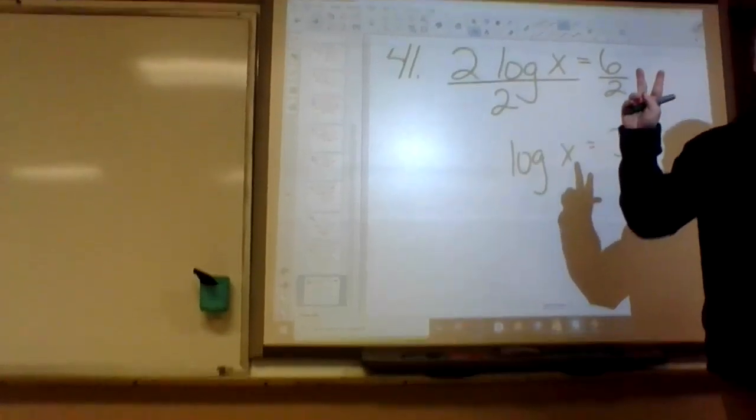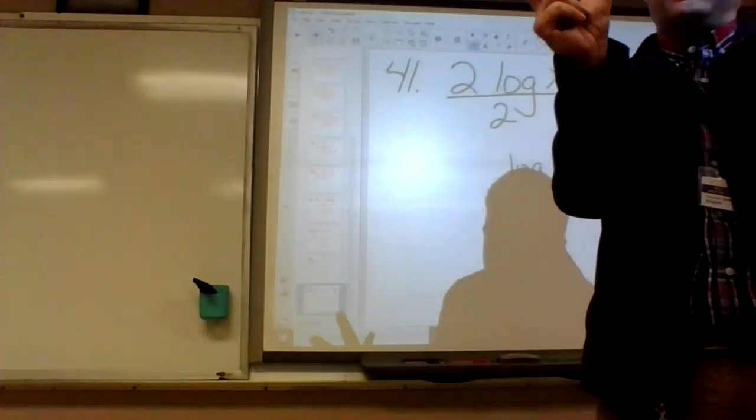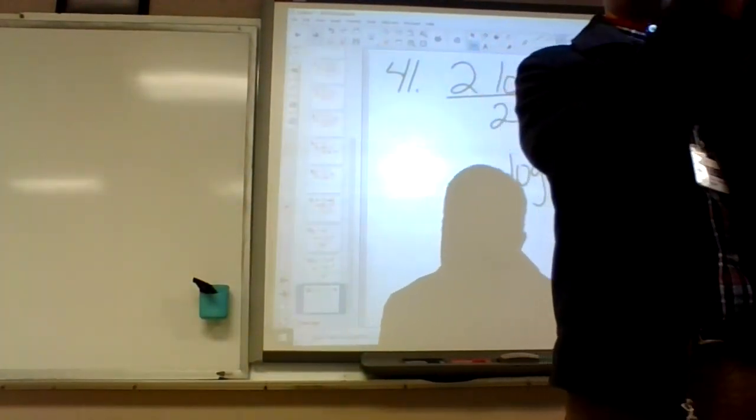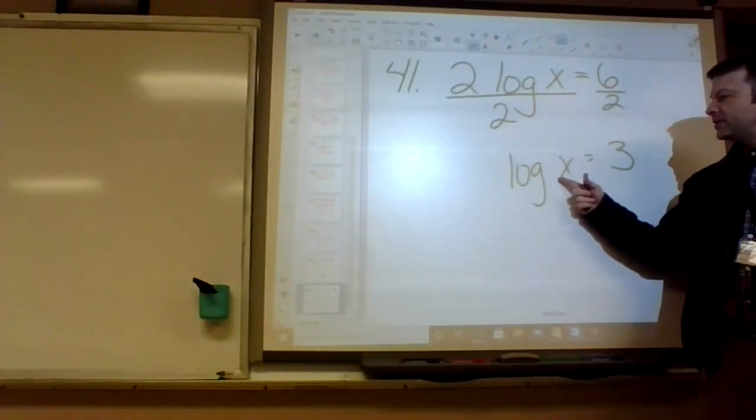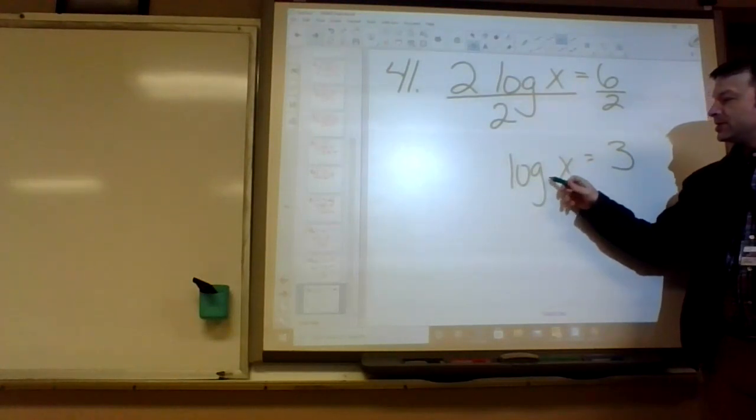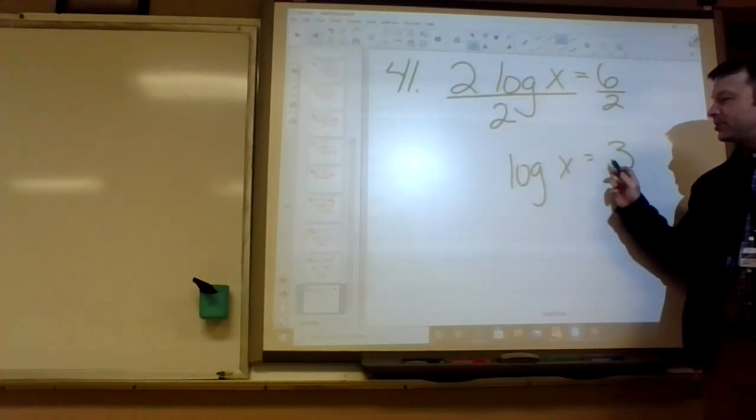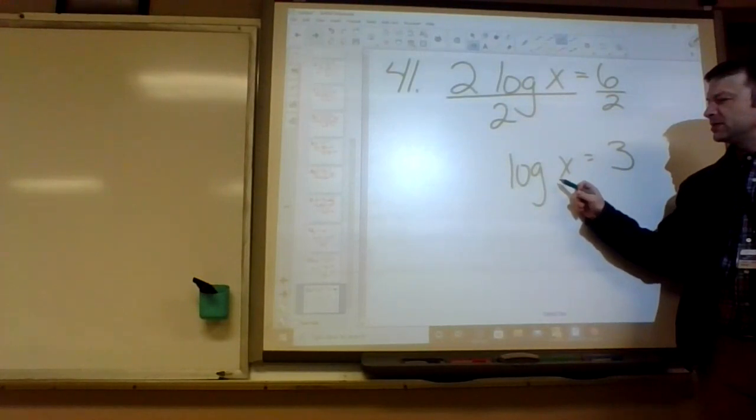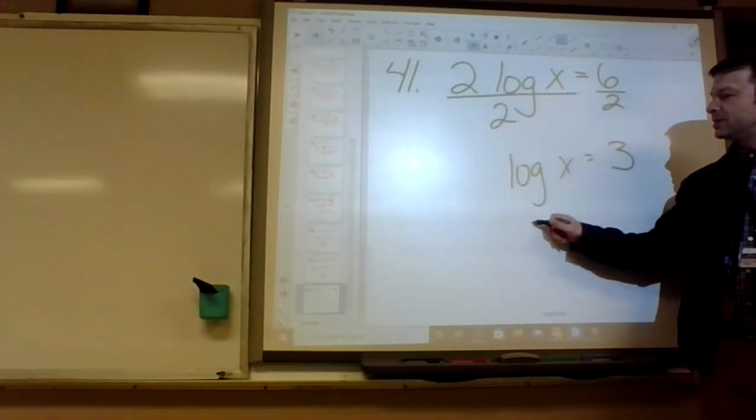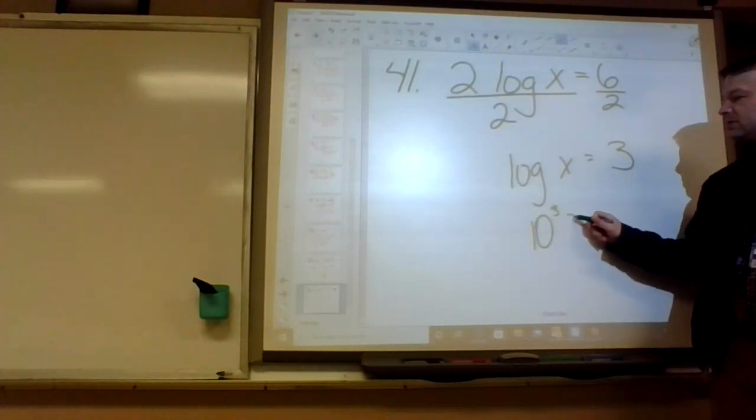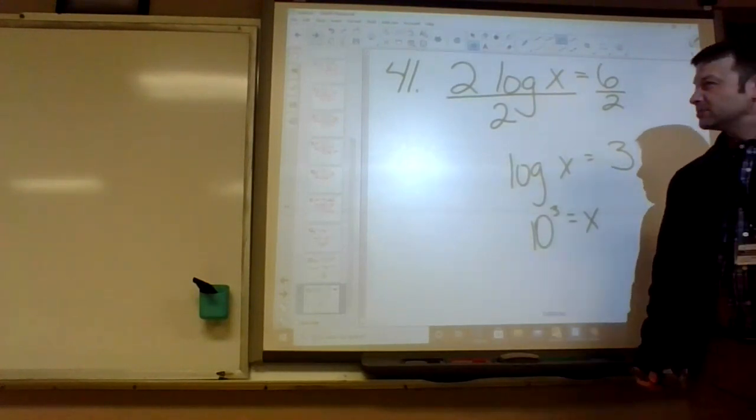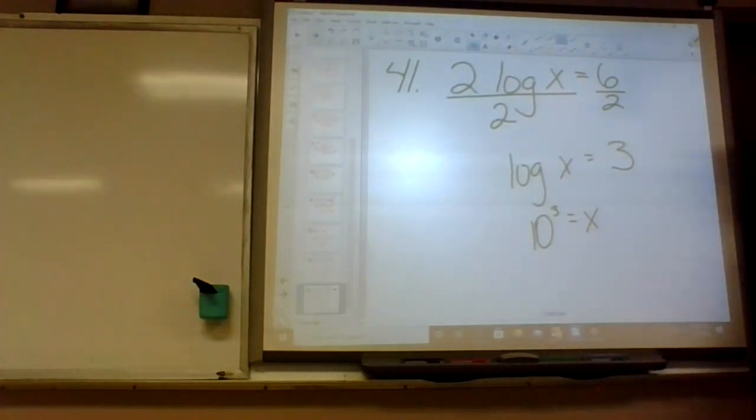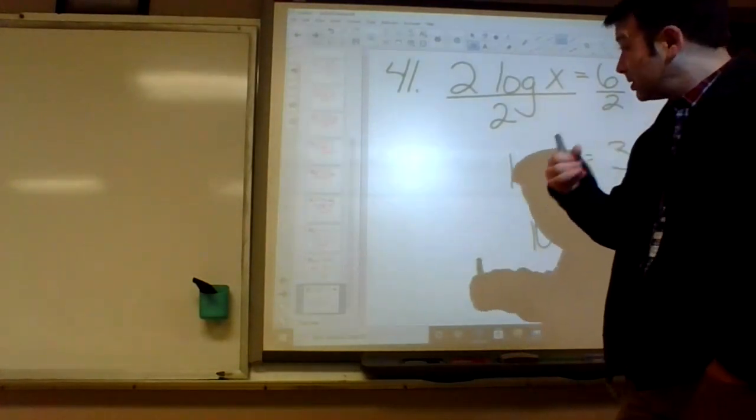Basically we had two tricks on these kinds of problems. We had both the logs are equal and we just set those two things equal. And the other thing is we change it. We did this a lot. We change it to exponential form. If the x is right here, that's basically what you're going to be doing. So what's this as an exponential equation? What's our base? Ten to the what? Ten to the third equals x. So what's ten to the third? One thousand.